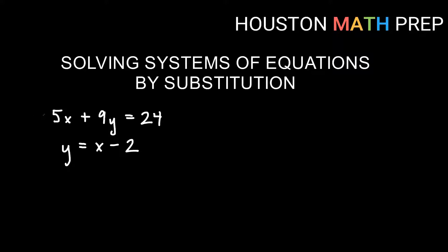So in my example that I've got right here I have 5x plus 9y equals 24 for the first equation. My second equation I have y equals x minus 2. So this second equation is already solved for one of the variables. This is saying that y is the same as x minus 2.